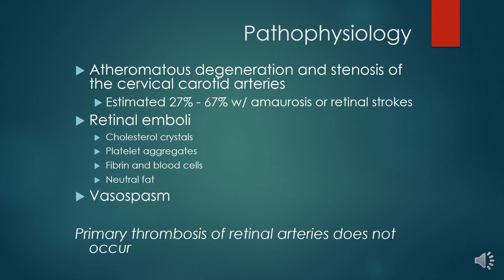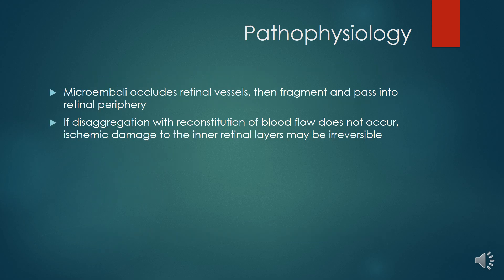Atheromatous degeneration and stenosis of the cervical carotid arteries is estimated in 27–67% of cases with amaurosis fugax or retinal strokes. Retinal emboli can be caused by cholesterol crystals, platelet aggregates, fibrin and blood cells, neutral fat, and vasospasm. Primary thrombosis of retinal arteries does not occur. Microemboli occlude the retinal vessels, then fragment and pass into the retinal periphery. If disintegration with reconstitution of blood flow does not occur, ischemic damage to the inner retinal layers may be irreversible.